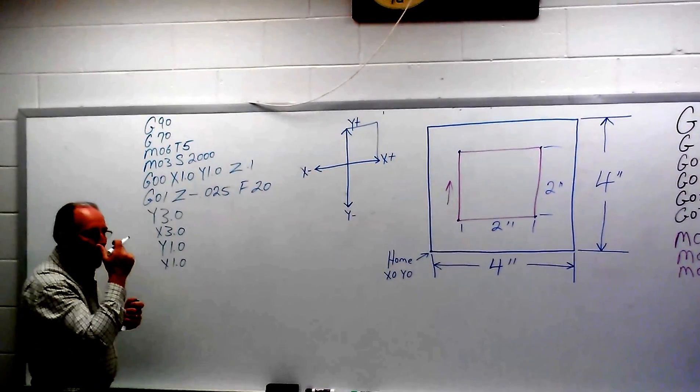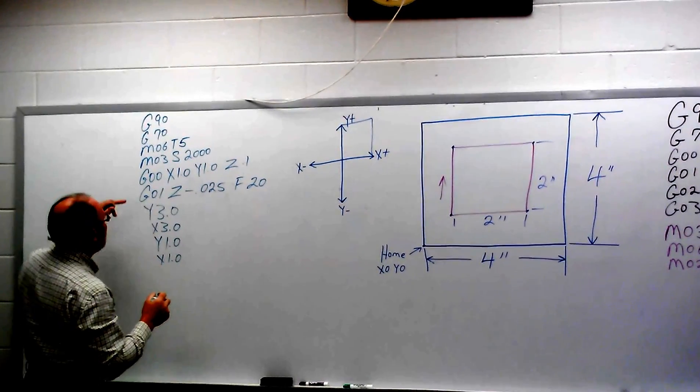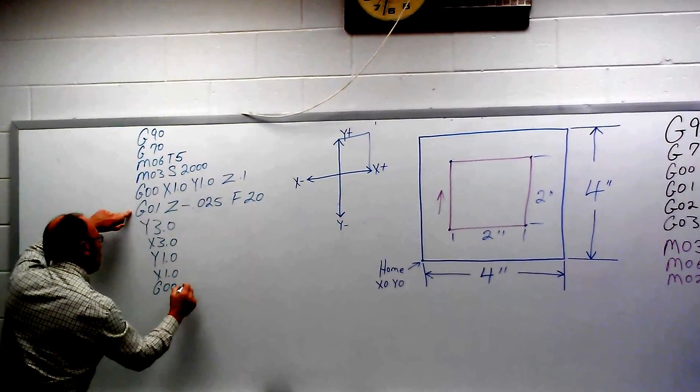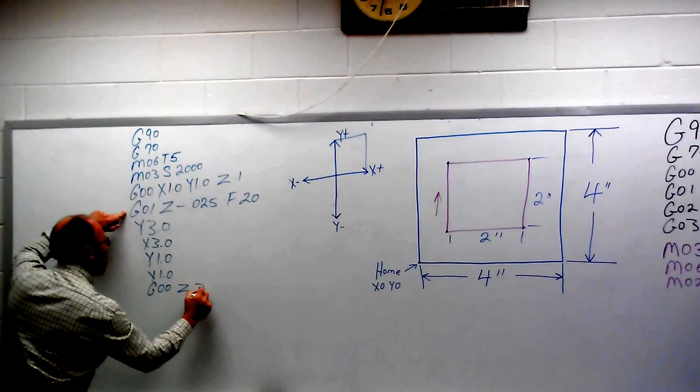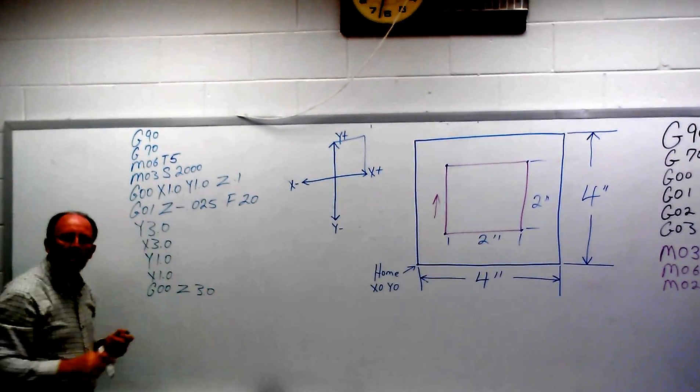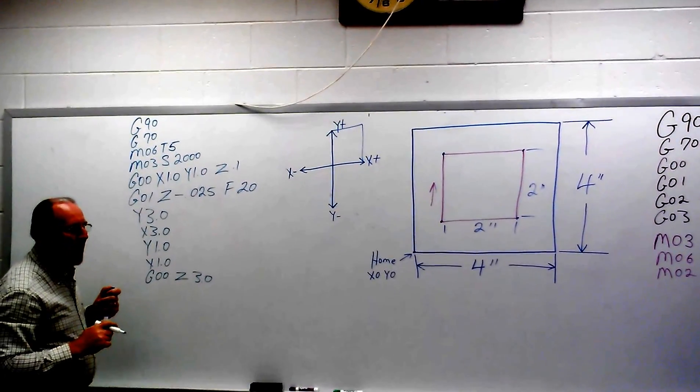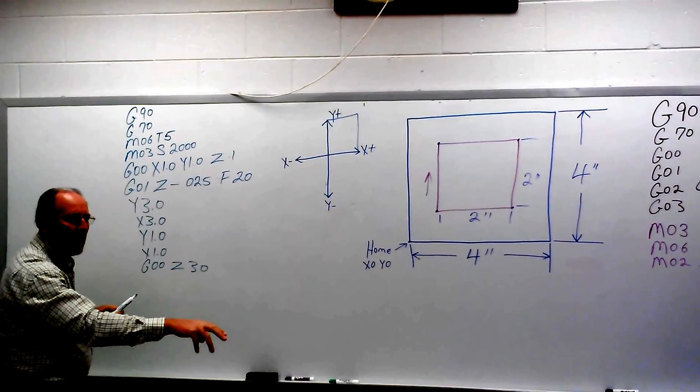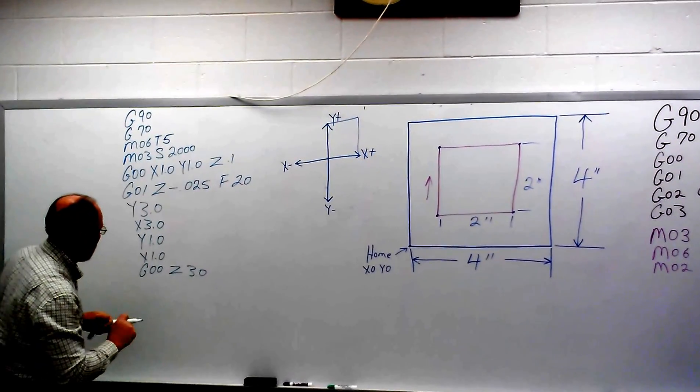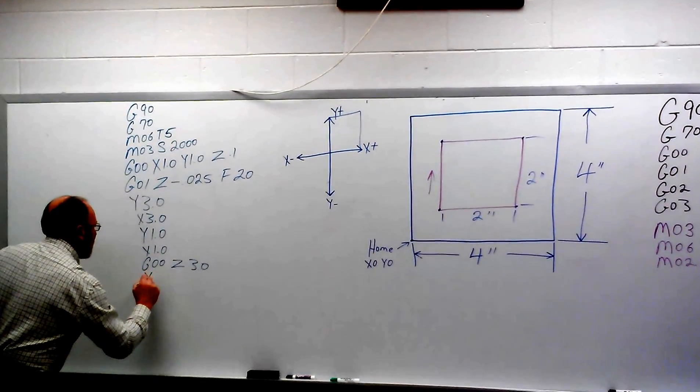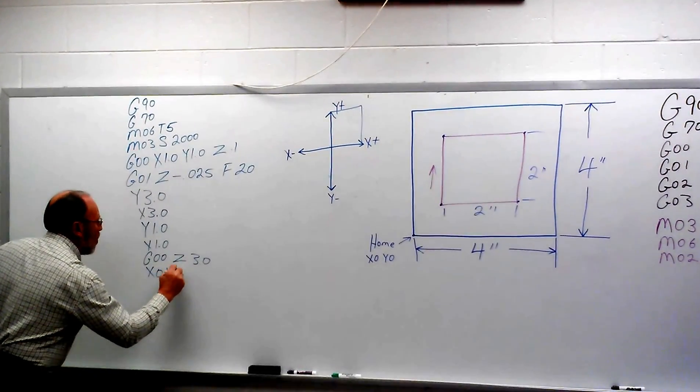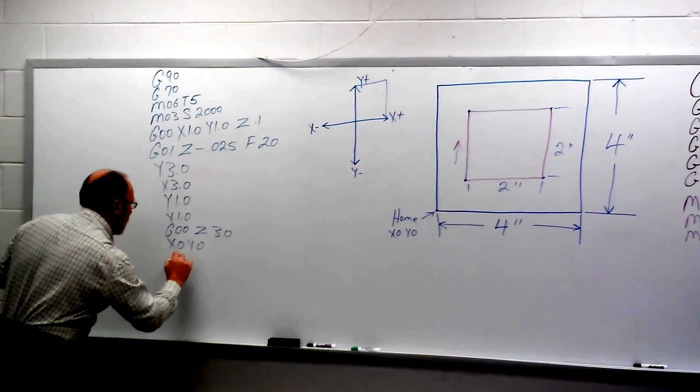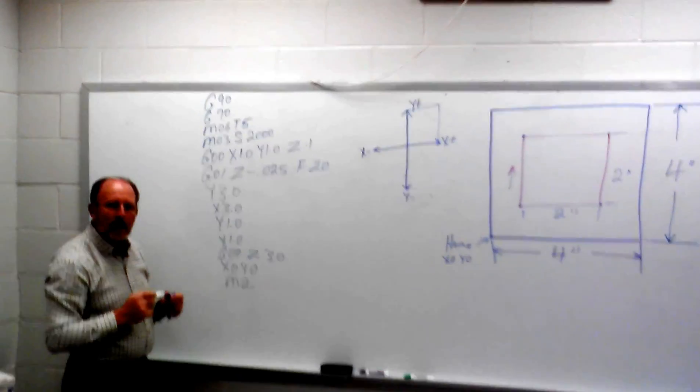Now that we're through, we can pick our tool bit up. That's going to take a rapid command, G00 Z 3.0 or anything above the surface, any positive number. I like to bring it up high enough where I can reach my hand and get my part without cutting my hand with the tool bit. Now if we take X back home and take Y along with it, it gets back to here to the beginning start point, and M2 will end that program.